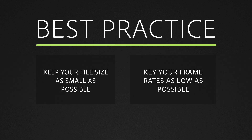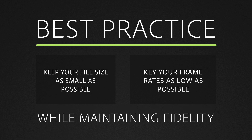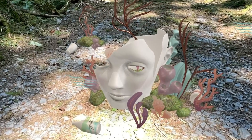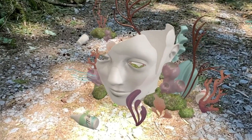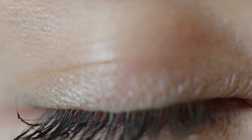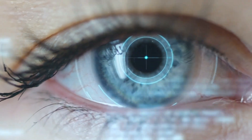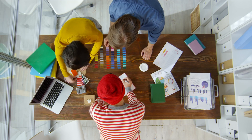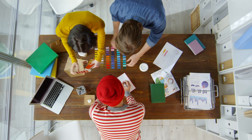I'll cover specific optimization techniques more in depth later, but in general try to keep your file sizes and frame rates as low as possible while maintaining fidelity. One thing to keep in mind is that designing for 3D is fundamentally different than designing for 2D. Since we are creating spatial experiences, we have to consider how to direct the eye in space. Luckily, there are a ton of pre-existing visual design principles that we can leverage and customize for our AR experiences.